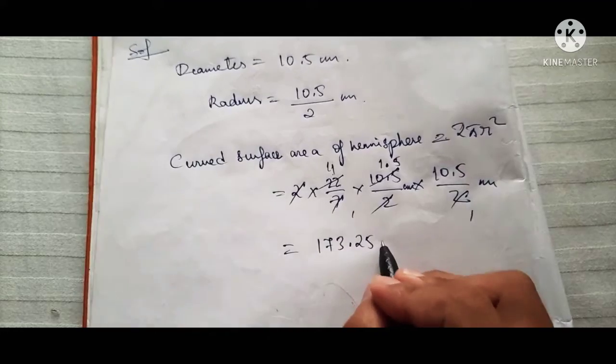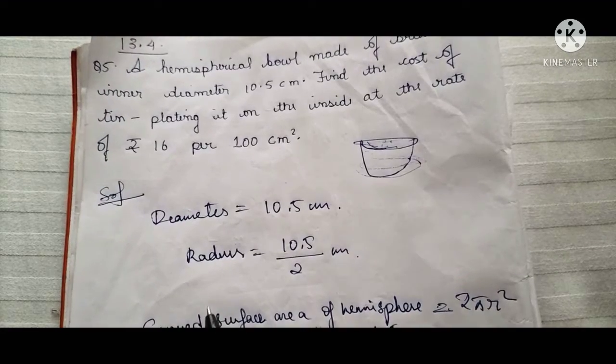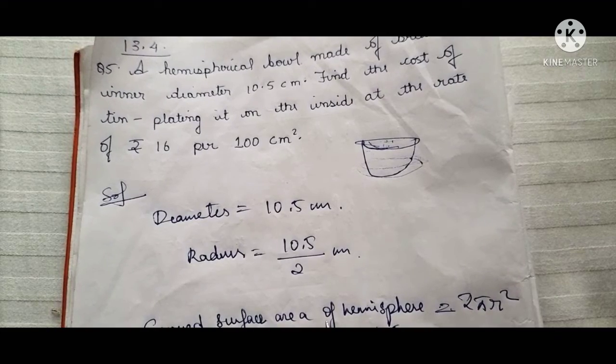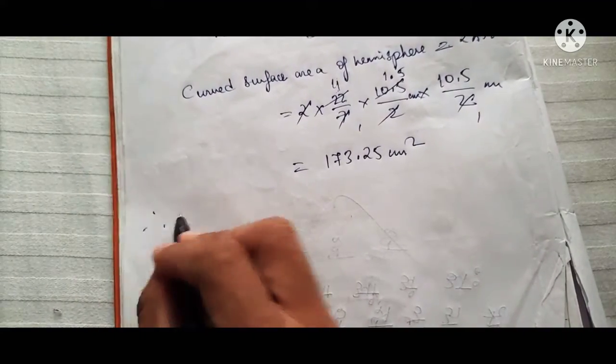Okay, so now again, find the cost of tin plating it on the inside at the rate of 16 per 100 centimeter square. Okay, therefore cost of tin plating.